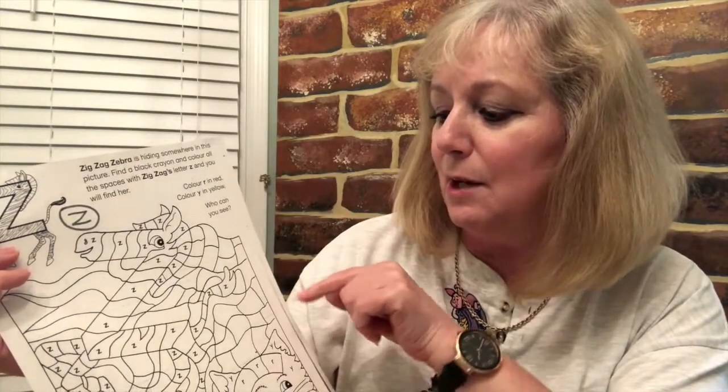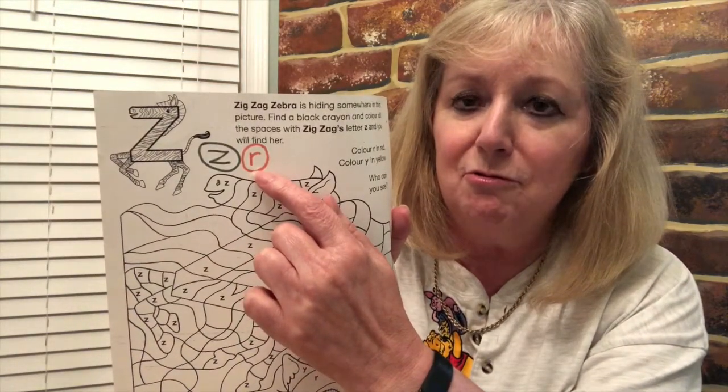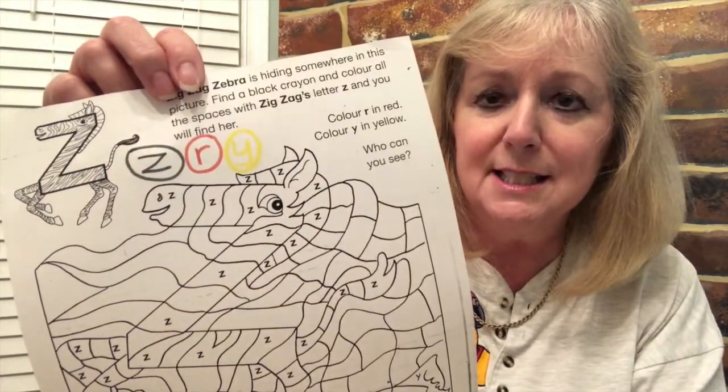Now if you see anything with an R, that's going to be red. Let me get a red crayon and put an R to remind me of that code. If I see an R it's going to be red. And then there's another one — if you see anything with a Y, that's going to be yellow. Y is yellow. I'm going to put the camera down so see if you can work out what this picture is going to be using this code.